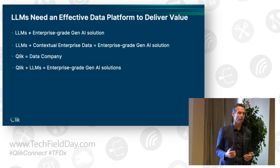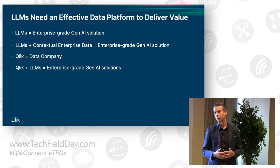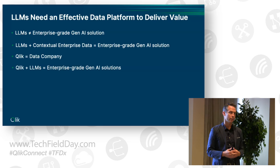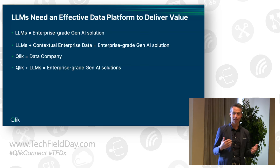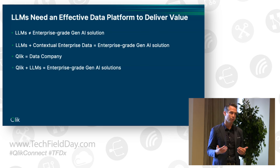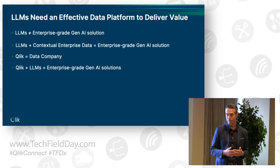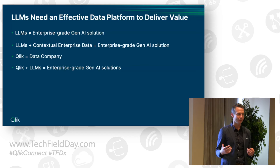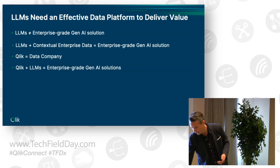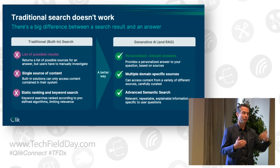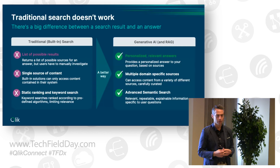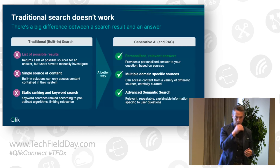The current leading use case for gen AI in the enterprise is retrieval augmented generation — the ability of users to ask natural language questions and get direct, contextually relevant, and trustworthy answers. Essentially every user has experienced ChatGPT in some way and now wants a ChatGPT-like experience in the enterprise. And that's because traditional search is broken — or at least it wasn't felt as broken until people experienced this new kind of experience.